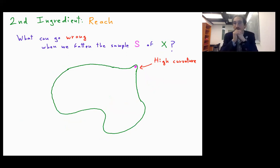And if we have a high curvature, again, something can go wrong for the same reason. If I fatten too much, we might change the topology.